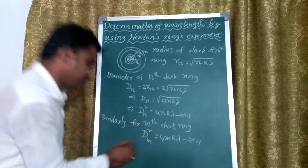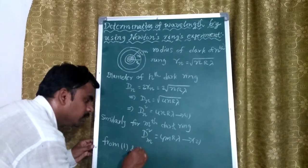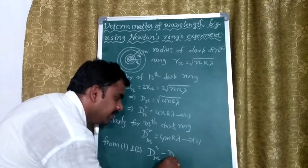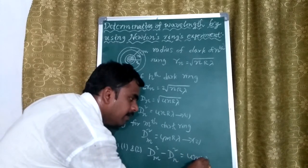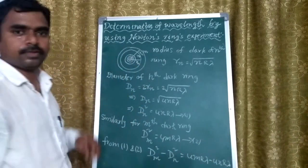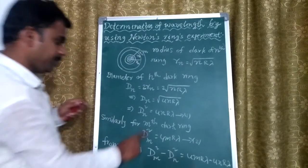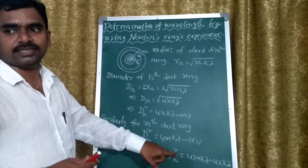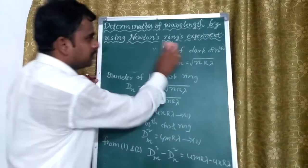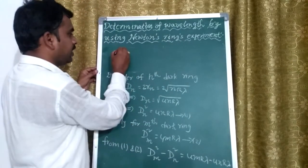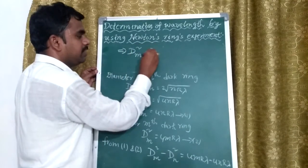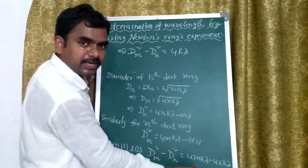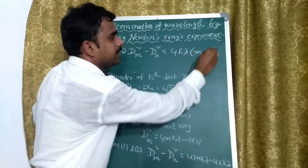From Equations 1 and 2, if we subtract, the left-hand side is d_m squared minus d_n squared, which equals 4·m·R·λ minus 4·n·R·λ. We can take 4·R·λ as common, giving d_m squared minus d_n squared equals 4·R·λ times (m minus n).